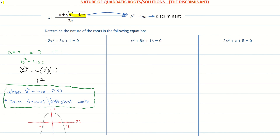Looking at the second example: x squared plus 8x plus 16. Here, a is positive 1 (the coefficient of x squared), b is 8 (the coefficient of x), and c is 16 (the constant). Subbing into the discriminant b squared minus 4ac: 8 squared minus 4 times 1 times positive 16 gives us 0. When the discriminant equals 0, it means we only have one real root, or equal roots.